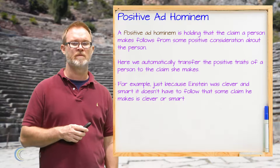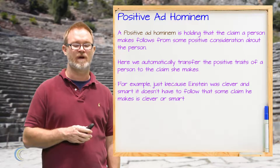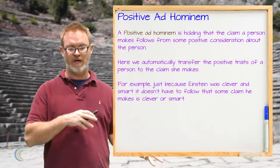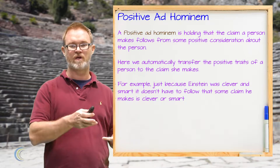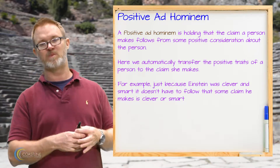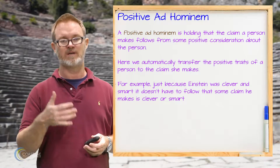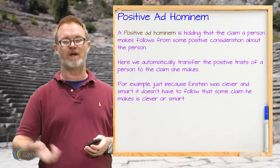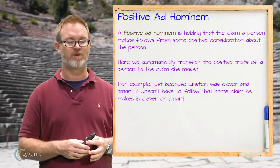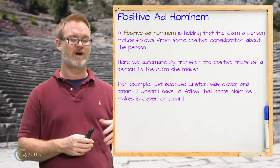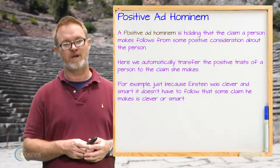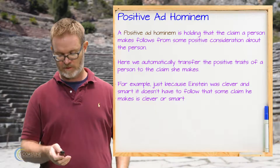A positive ad hominem is one where it's not a negative or a ridicule — it's not an objection to someone's argument just because of who they are. In fact, it's actually sort of buying into somebody's argument just because of who they are. So for example, if we thought that just because Einstein said something it had to be true, that would be a kind of positive ad hominem.